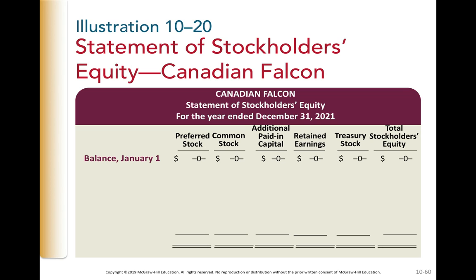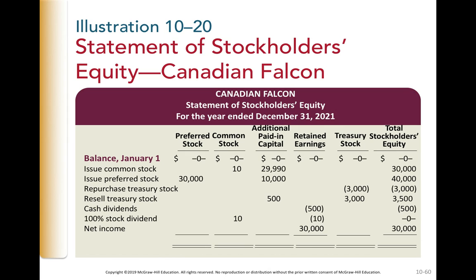So let's look at the statement of stockholders' equity for Canadian Falcon. At the beginning of the year, we're going to assume that their balances are zero across the board. During the year, they issue common stock. This common stock is at par value in the common stock column, and the additional paid-in capital is listed next to that for total stockholders' equity of $30,000.